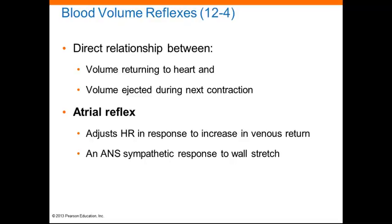Starting with blood volume reflexes: cardiac muscle contraction is an active process, but relaxation is entirely passive, provided by blood pouring into the heart, aided by the elasticity of the cardiac skeleton. As a result, there is a direct relationship between the amount of blood entering the heart and the amount ejected during the next contraction. One important reflex is the atrial reflex, which adjusts heart rate in response to an increase in venous return. The entry of blood stimulates stretch receptors in the right atrial walls, triggering an increase in heart rate through sympathetic activity.